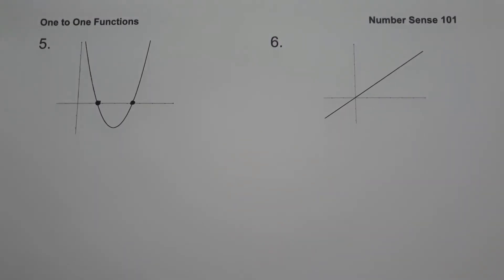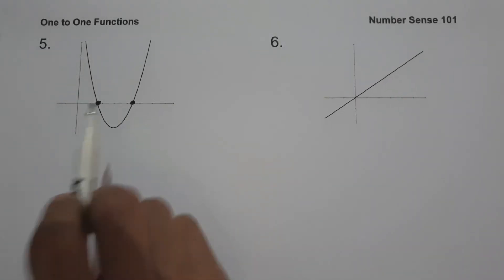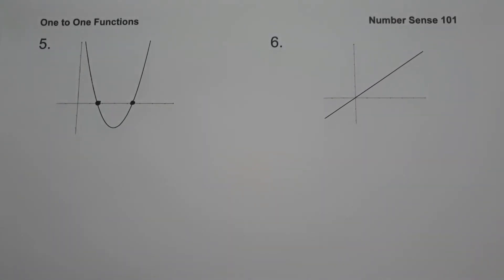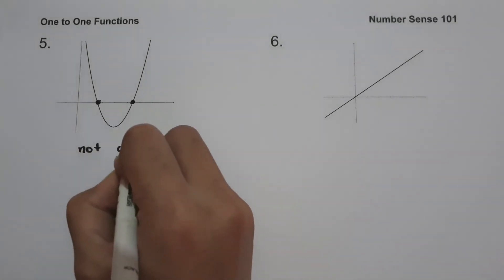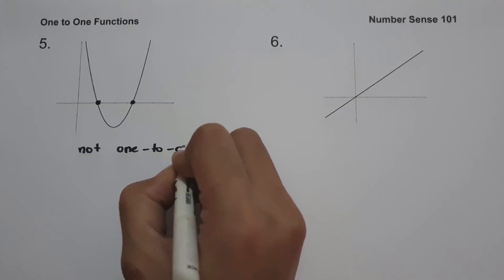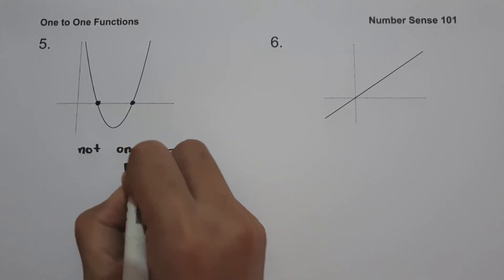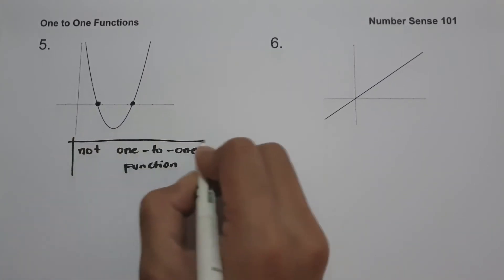On example number five, we have a graph of a quadratic function. This graph is not one-to-one because it fails the horizontal line test — it intersects the horizontal line more than once. Always remember, a function is one-to-one if each horizontal line does not intersect the graph at more than one point.